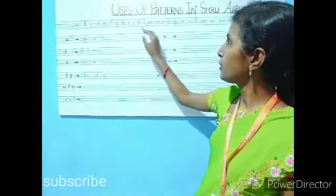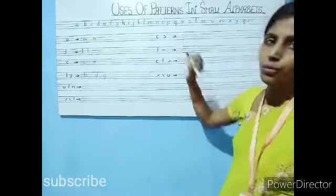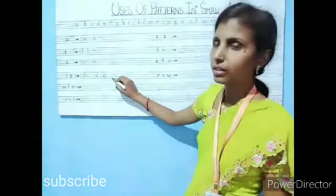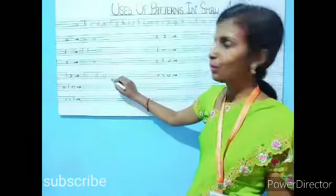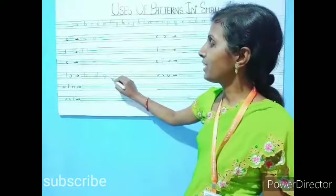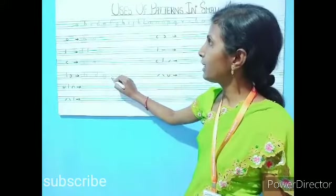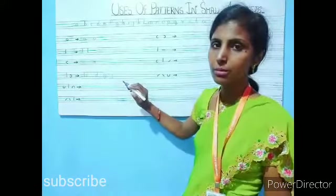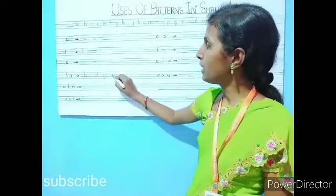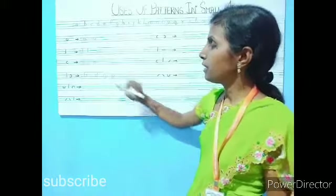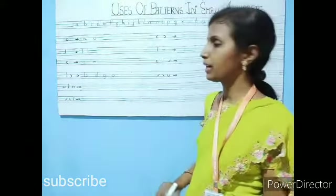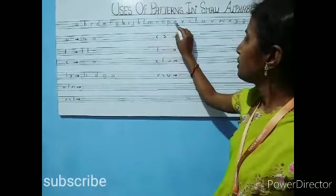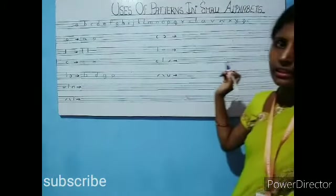Any other letter? We can write small P also. Give a standing line from second to fourth line, then give a small semi-circle — like B and D — in the middle of two lines. It becomes small P.